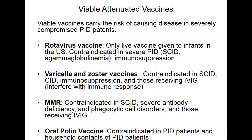MMR, like any other live vaccine, is contraindicated in these disorders and also in phagocytic disorders. All IVIG preparations contain antibodies to MMR. If you give any vaccine against which IVIG already has antibodies, the antibody will bind to the vaccine like a key and lock, making the vaccine unavailable to stimulate whatever small amount of immune system remains. The vaccine's effect will be nullified. Oral polio vaccine, being a live vaccine, is contraindicated — but intramuscular inactivated polio is acceptable. Oral polio is also contraindicated in a household context.